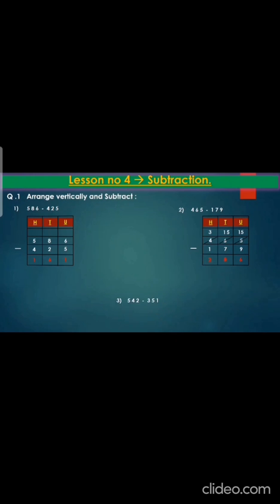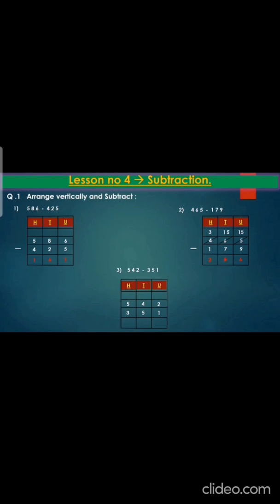Now let's do the third sum. First write down the question, then draw the box with pencil. Write hundreds, tens, units. Then copy down the question: 542 minus 351. Now start from behind: 2 minus 1 — the answer will be 1. Now we cannot minus 4 minus 5, so we have to take 1 from 5 — it will become 4 — and give it to 4, it will become 14. Now 14 minus 5 is 9. And 4 minus 3 is 1.